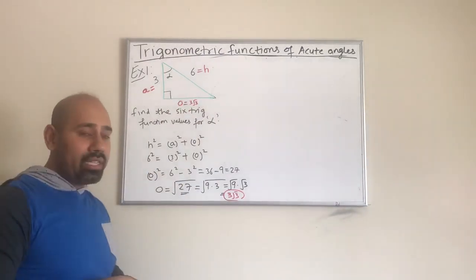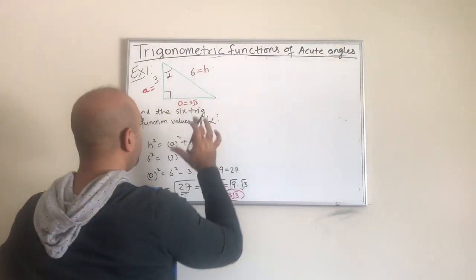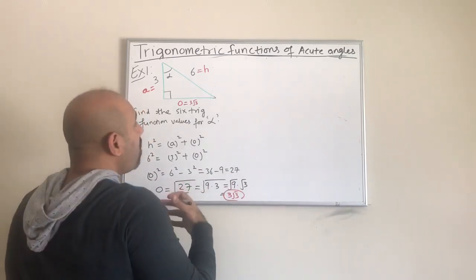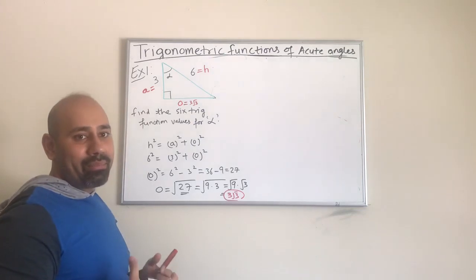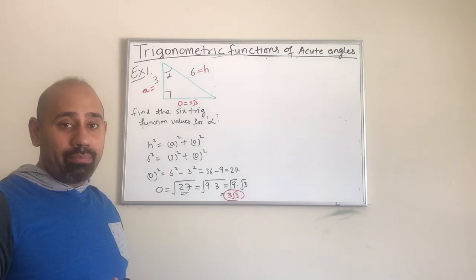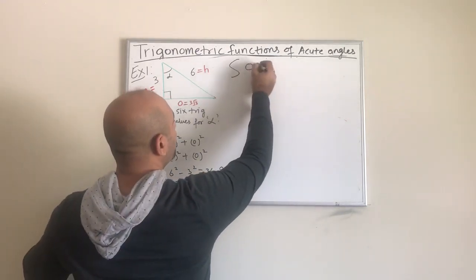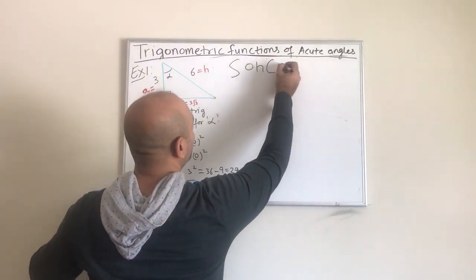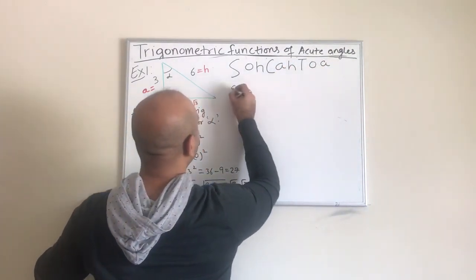Now let us go ahead and write the six trig ratios. Before I start, I will remind myself of the short form — the technique to remember sine, cosine, and tangent. Once we have those three, we can produce the other three functions. Sine is opposite over hypotenuse, cosine is adjacent over hypotenuse, and tangent is opposite over adjacent.